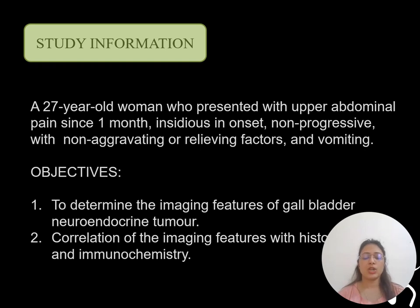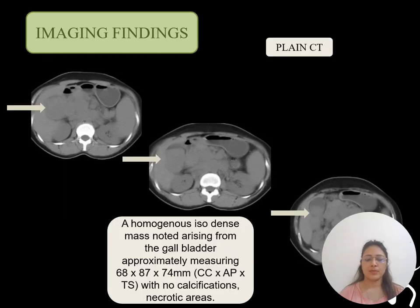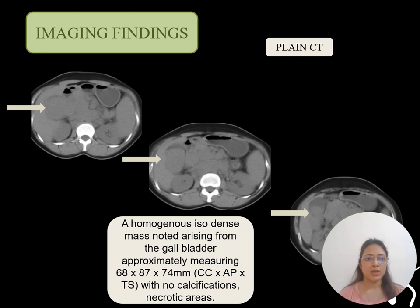Second, correlation of the radiological imaging features with histopathology and immunohistochemistry. First, NCCT abdomen was done, which showed a homogenous iso-dense mass noted in the gallbladder measuring approximately 6.8 x 8.7 x 7.4 cm, with no calcification or necrotic areas present in it.